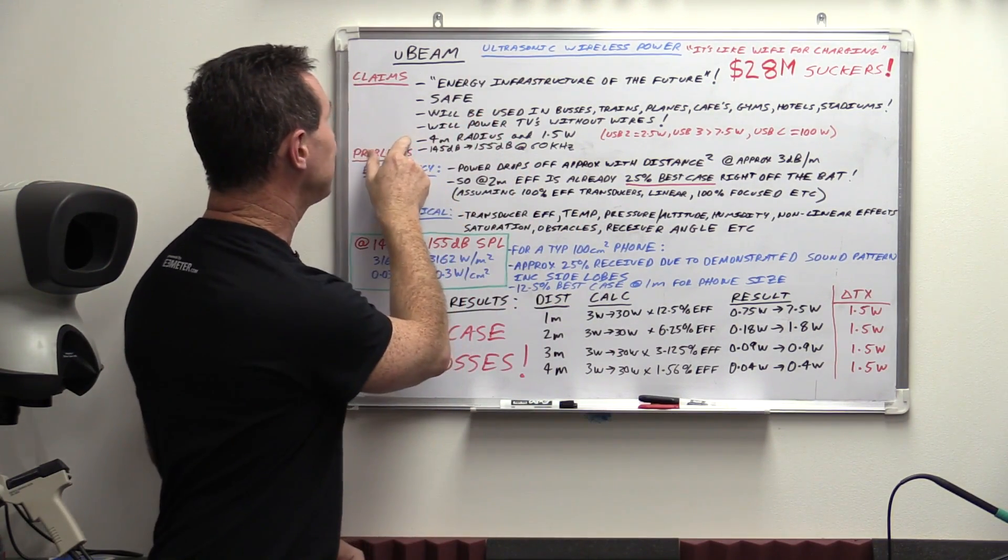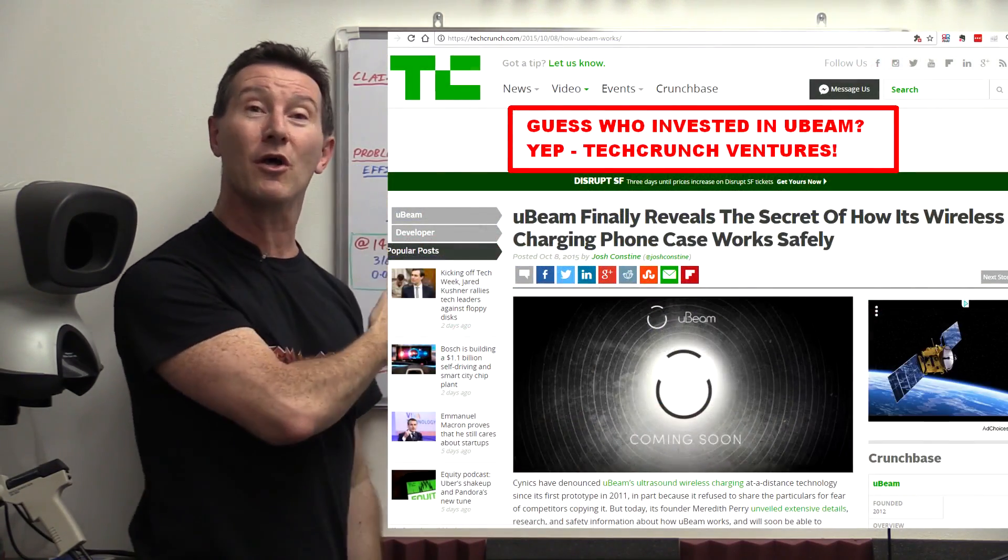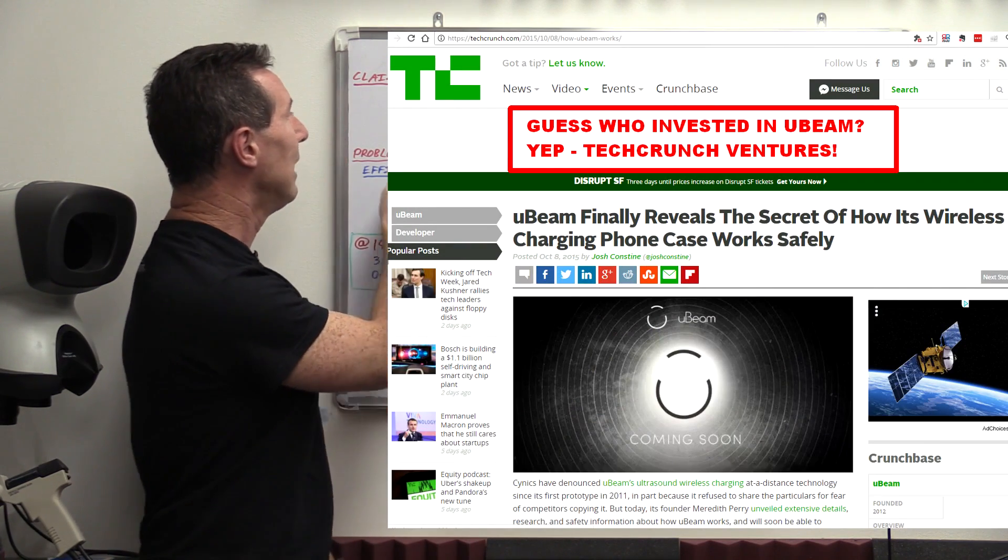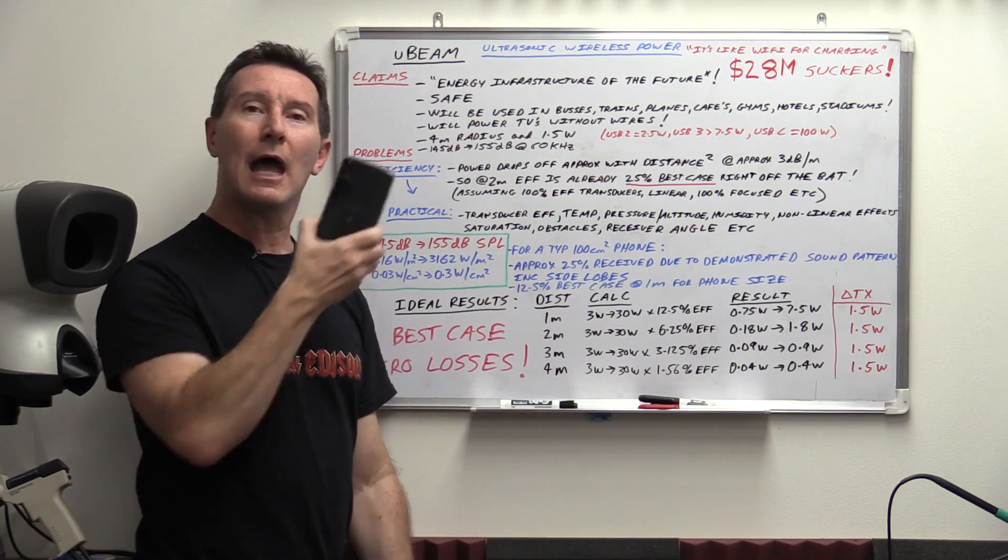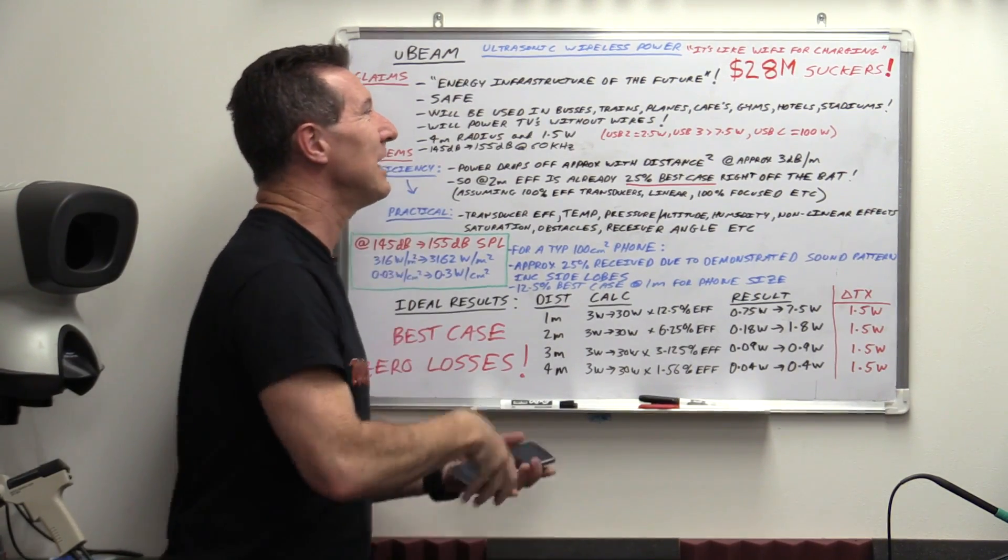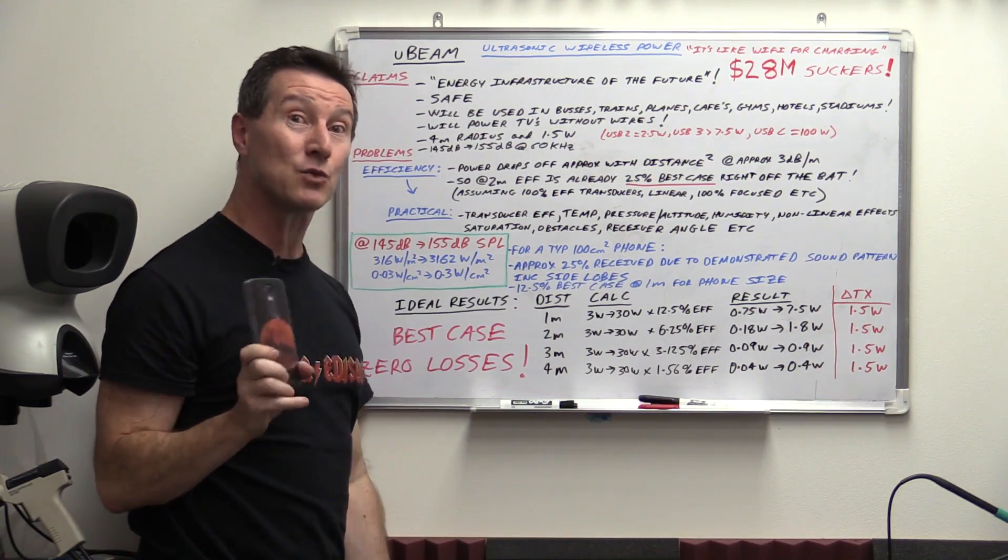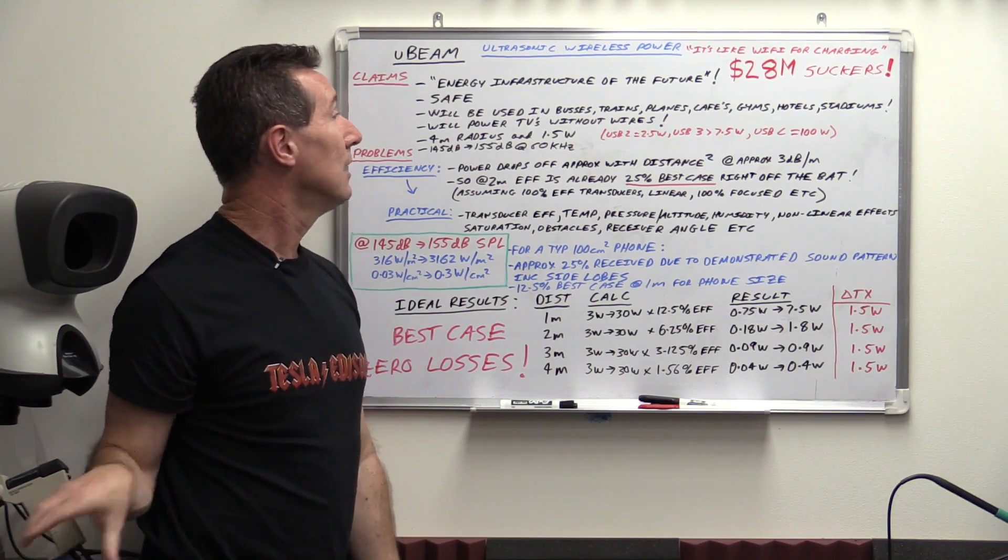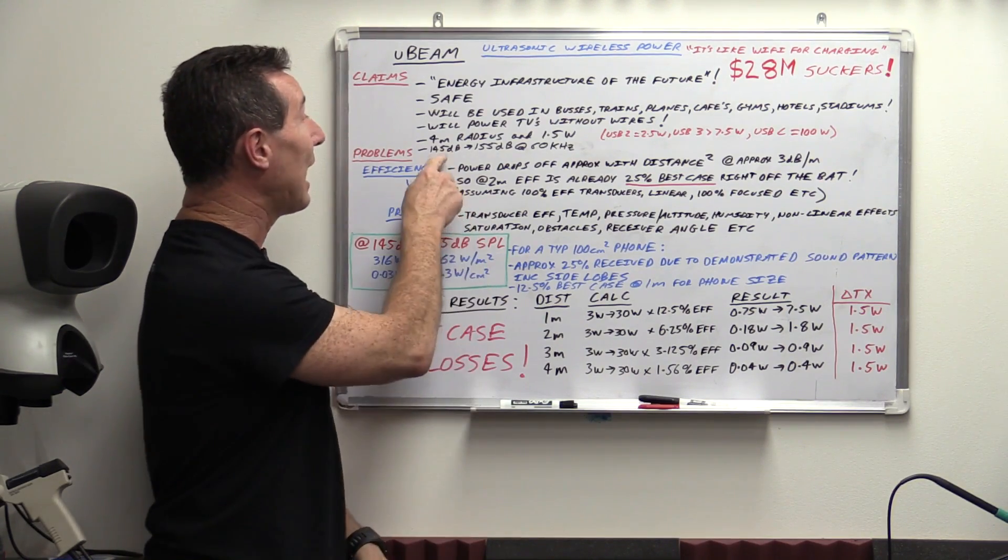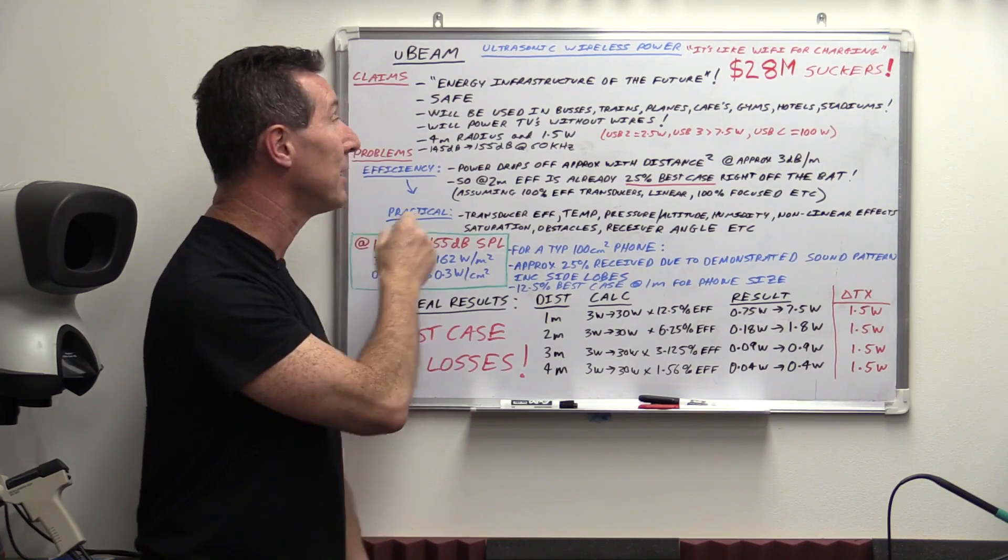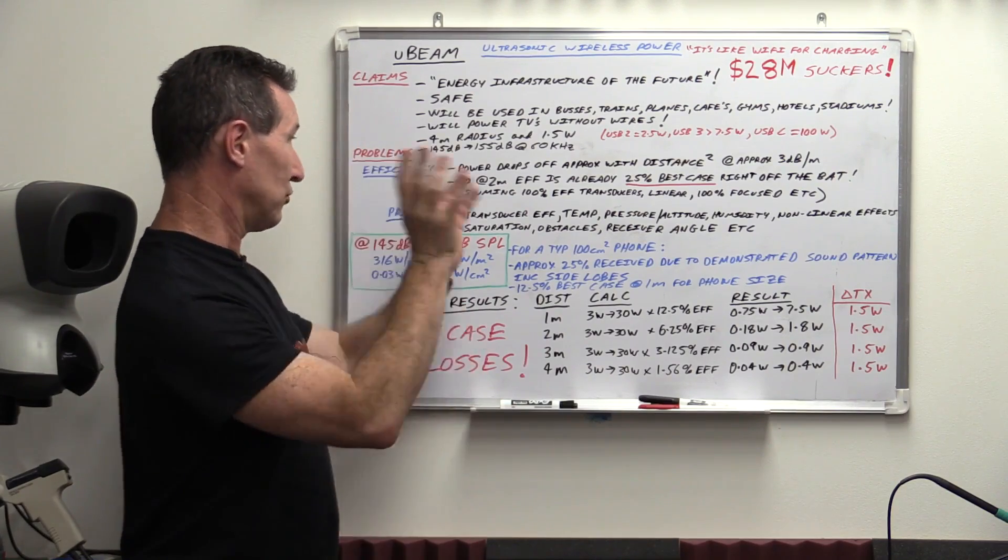It will power TVs without wires. Pixie dust. They were very secretive for a couple years, then finally revealed some stats. They've been working on this for like five years. They finally said we can do a four-meter radius and charge a phone at 1.5 watts. Not nearly as good as USB can do. You can wonder why anyone needs wireless charging at all with how fast modern chargers can go. They released their specs - 145 dB to 155 dB at 60 kilohertz SPL.